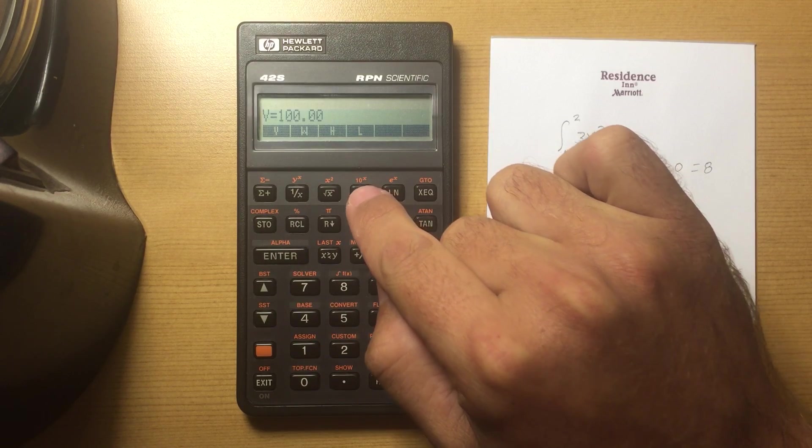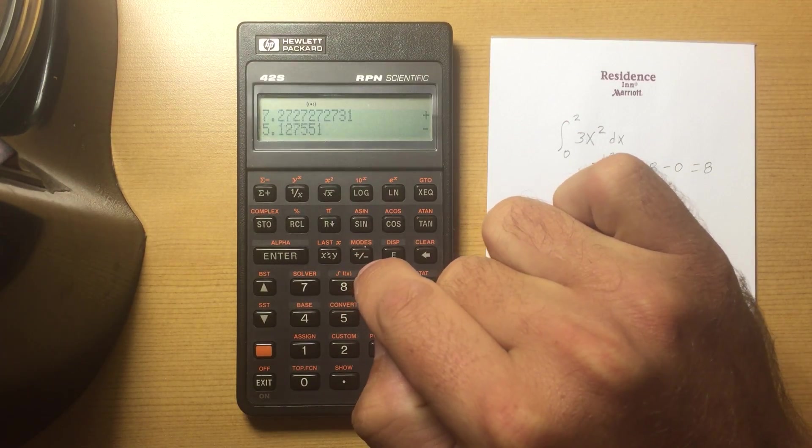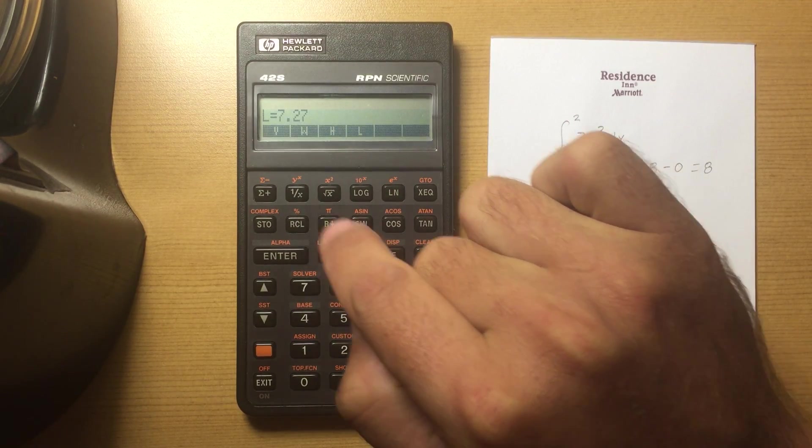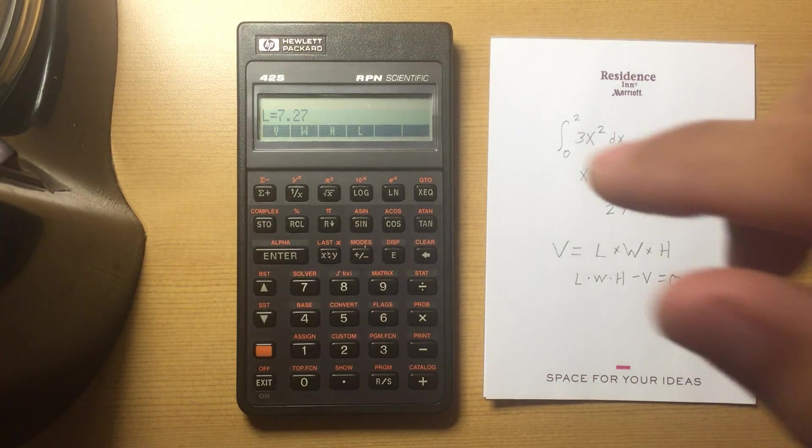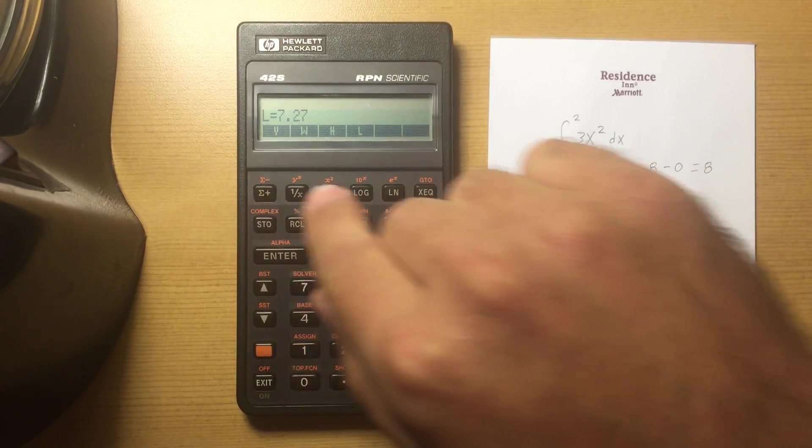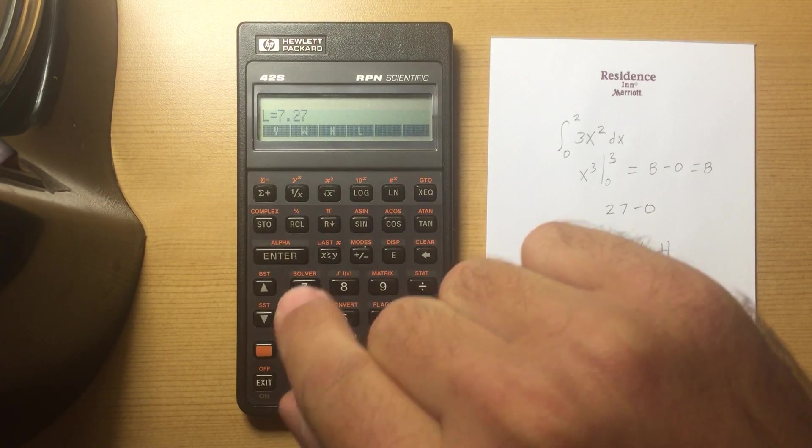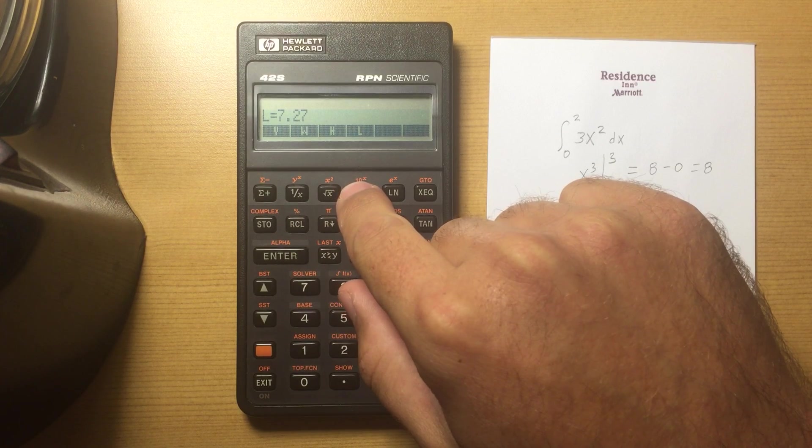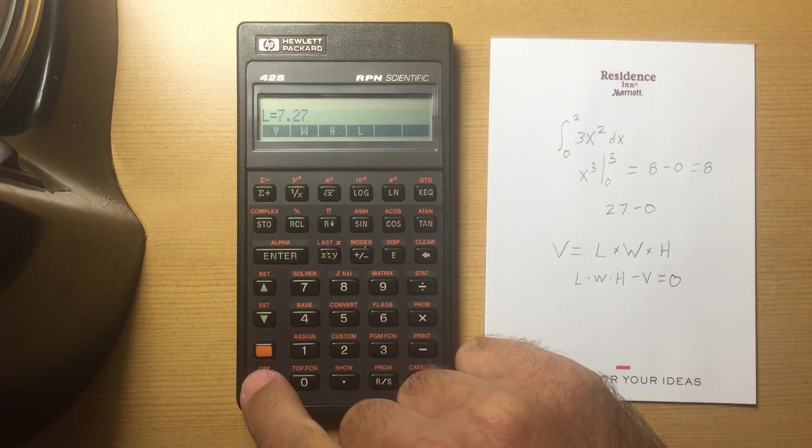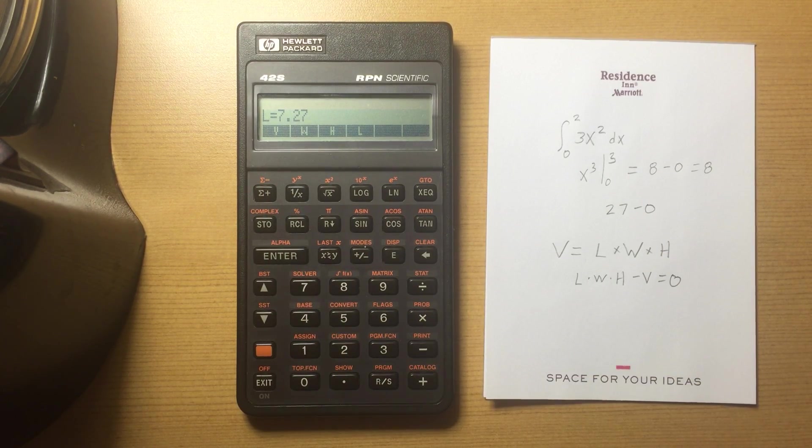How long will that box have to be? It has to be 7.27, whatever units we're using, long. So very nice—you can enter in what you know into these menu variables that you've created and then solve for what you want.